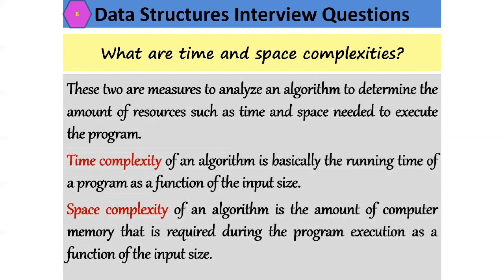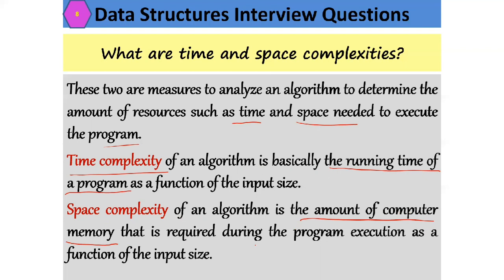What are time and space complexities? To measure the efficiency of an algorithm, there are two parameters: time and space. Time complexity is the running time of the program — the time taken for the program to execute. Space complexity is the amount of computer memory required during program execution as a function of input size. Space and time complexities were very prominent in the 1970s when 1 GB was very costly; today space complexity is less prominent, but time complexity remains important.